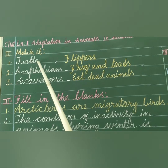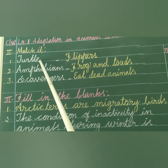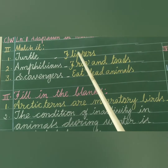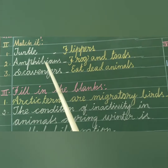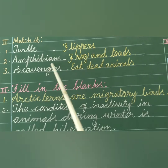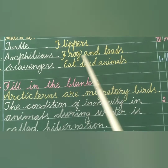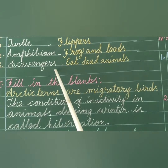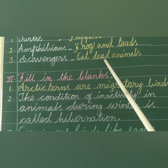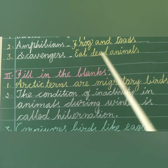First one: Turtle — flippers. Amphibians: Frogs and toads. Scavengers eat dead animals.